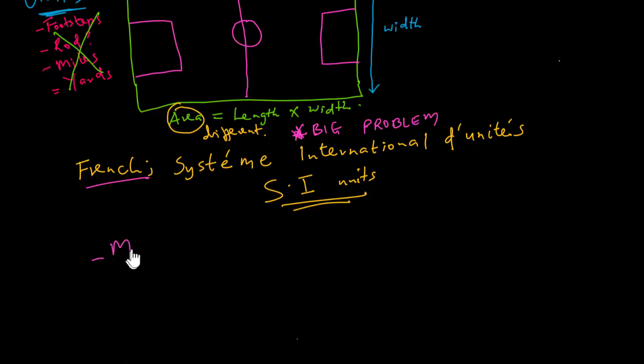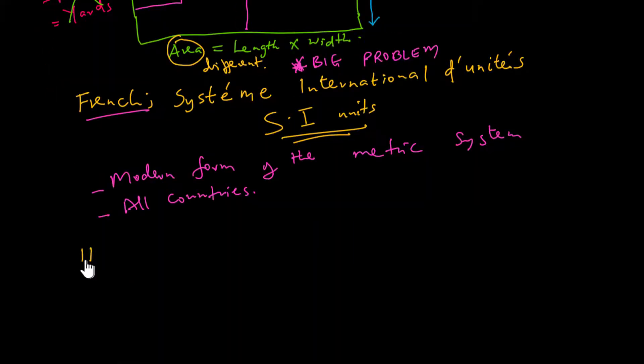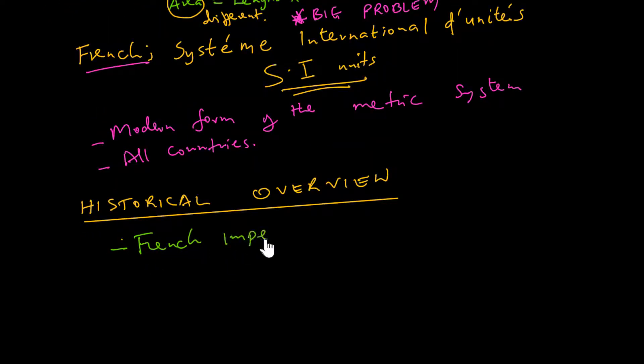The International System of Units, abbreviated as SI from the French 'Système International d'Unités', is the modern form of the metric system. It is the only system of measurement with an official status in nearly every country in the world. Before we dive into the seven basic units of measurement as were agreed upon in 1960, let's look at some historical overview. The creation of the metric system, following the complete destruction of the traditional imperial French unit system, marks the beginning of a series of events that eventually led to the currently accepted international system of units.